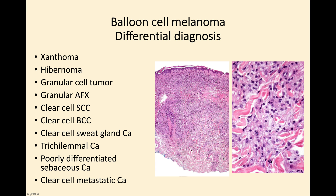The differential diagnosis of balloon cell nevi and balloon cell melanoma is quite broad. Xanthoma is probably one of the most difficult differentials, because looking at some examples you'd be very hard-pushed to say whether you were looking at a xanthoma or balloon cell nevus cells. You might have to use immunohistochemistry to tell the two apart if you couldn't find any melanin pigment.